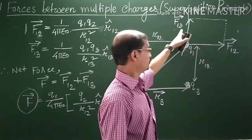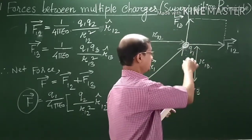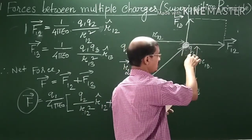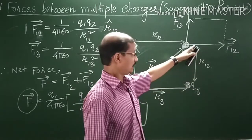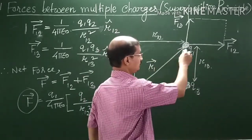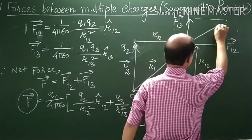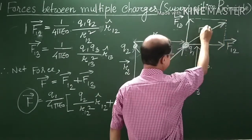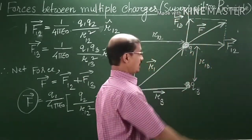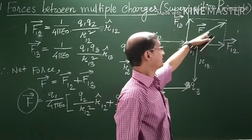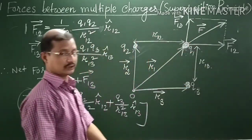F12 and F13, these two forces are acting on the charge Q1. So we apply parallelogram method. The diagonal of this parallelogram will represent the net force F along the diagonal.